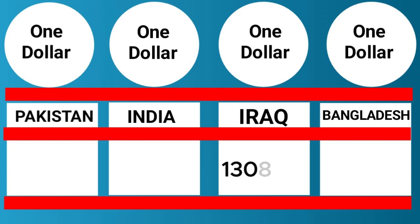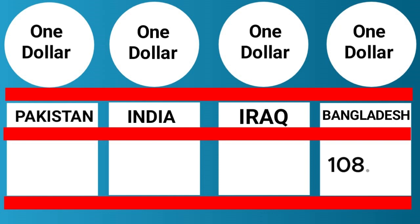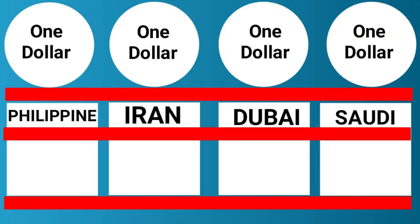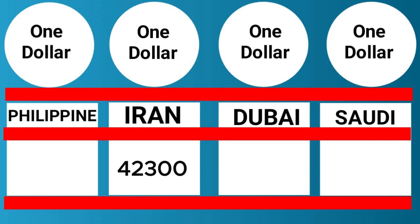1 US Dollar is equal to 1308.88 Iraqi Dinar. 1 US Dollar is equal to 108.20 Bangladeshi Taka, and 1 US Dollar is equal to 55.80 Filipino Peso. 1 US Dollar is equal to 42,300 Iranian Riyal.